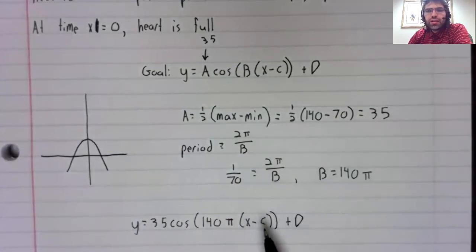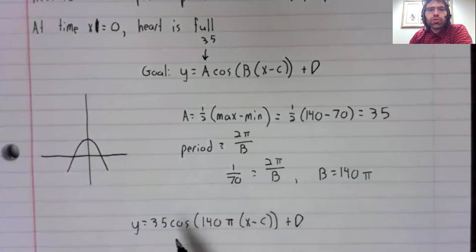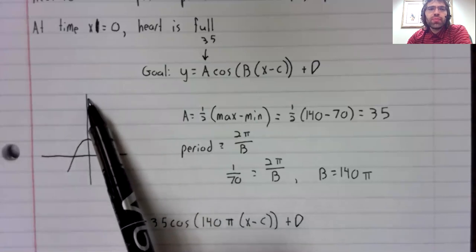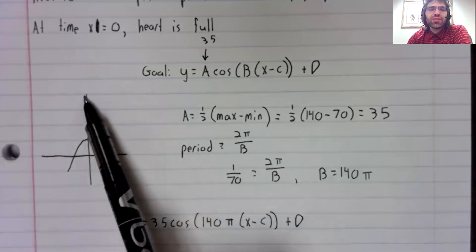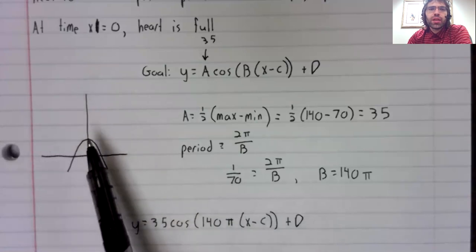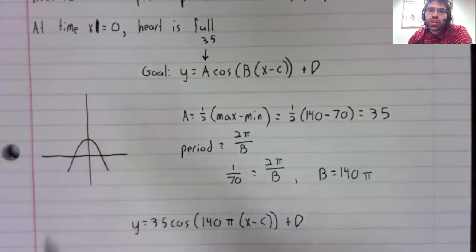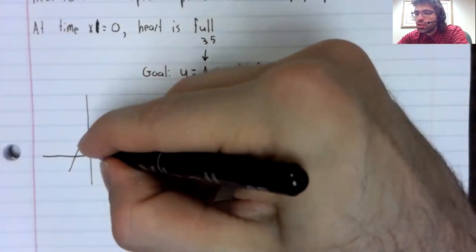C is our phase shift. And now here's where using the cosine is going to be beneficial to us. What we want is for the maximum to be on the y-axis. And the maximum of the cosine is on the y-axis.